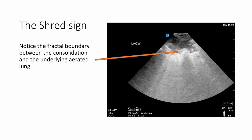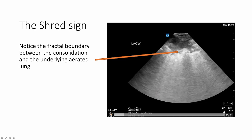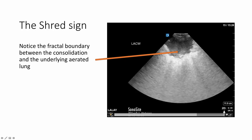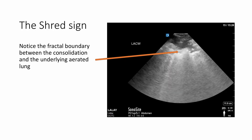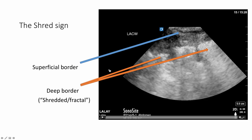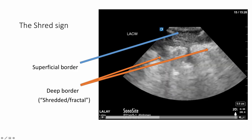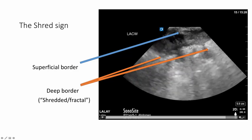Here's an example of the shred sign. We see a deep irregular border — a fractal or shredded border where we are at the boundary of aerated and consolidated lung. This image is taken from the left anterior chest wall position. The blue arrow points to what is considered the superficial border of the pleural line. The orange represents the deep shredded or fractal border. And this gives us the shred sign. Notice we have some B-lines emanating from this border.